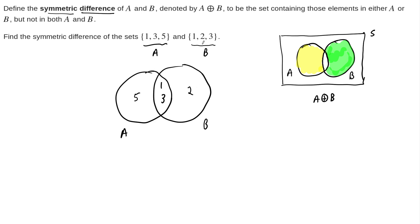But now I've filled out all these sets. So if you just look at A, you see 1, 3, 5. If you just look at B, you see 1, 2, 3. And it's exactly right. Well, now what's the symmetric difference of these two?